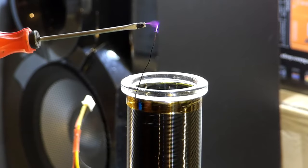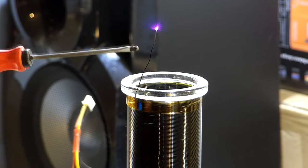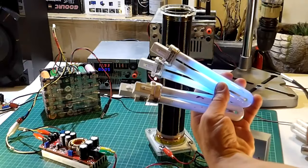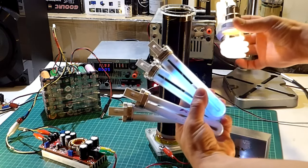As you can see the arcs are bigger and scary but as well quite fascinating to look at them. Now at this voltage the tesla coil can provide more power as seen here.